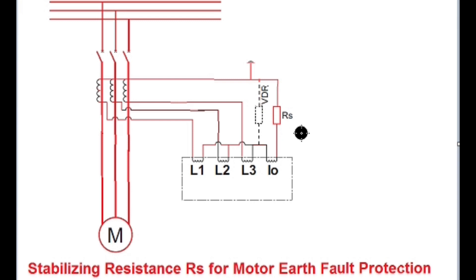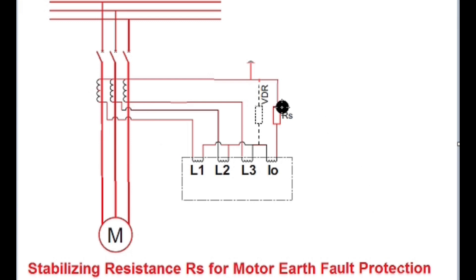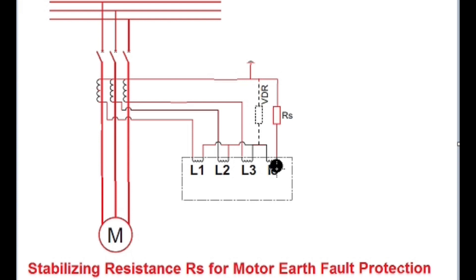The purpose of the stabilizing resistance is to provide stability during starting of the motor if either of the CTs saturate. In this video I will discuss how to calculate the value of the stabilizing resistance RS and also whether the VDR — that is the voltage dependent resistor or metrosil — is required in parallel with the resistance and earth fault coil or not.